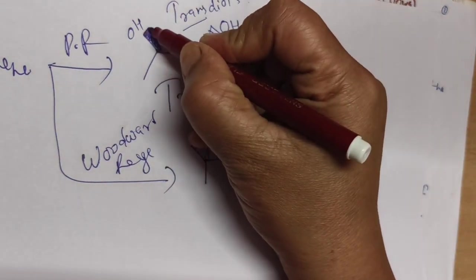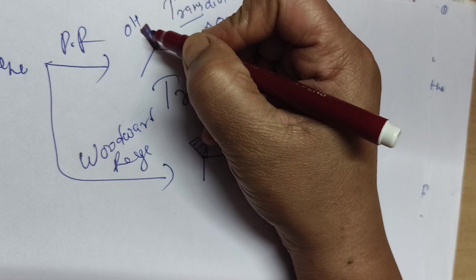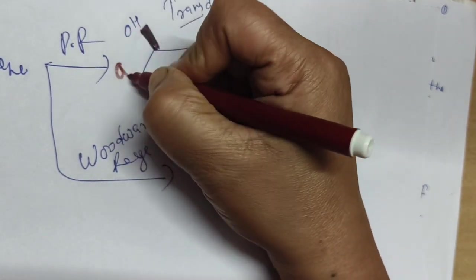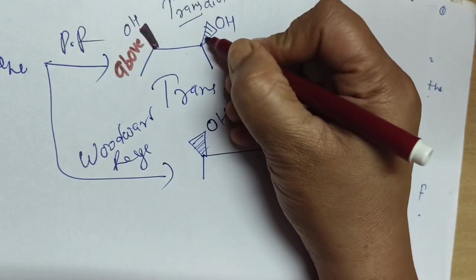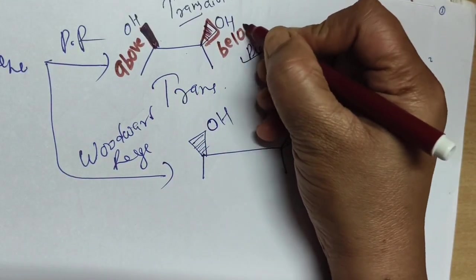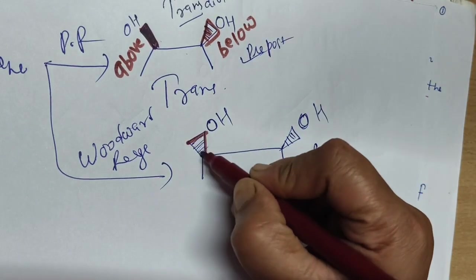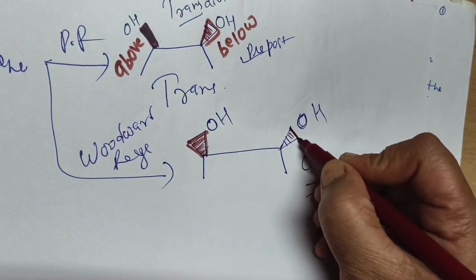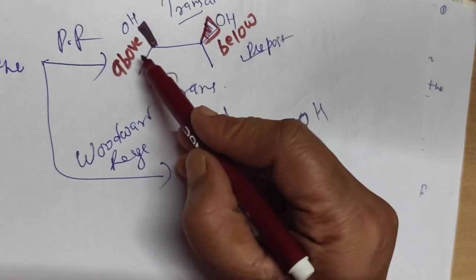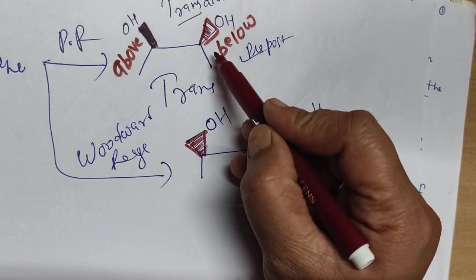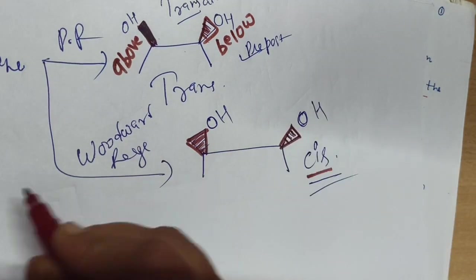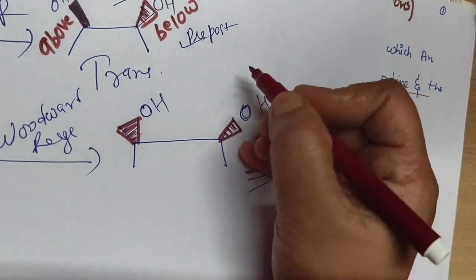A solid wedge represents an OH group above the plane of the paper, and a dashed wedge means the group is present below the plane of paper. If both OH groups are represented below the plane of paper, that is cis-diols. If one is above the plane and one is below the plane of paper, that is a trans-diol.